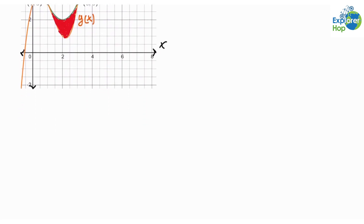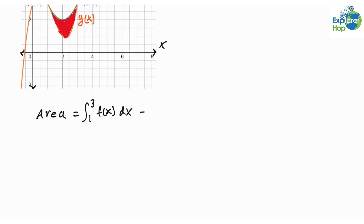So the area is equal to the area under f(x) over this interval, which is the definite integral from 1 to 3 of f(x) dx, minus the area under g(x) over this interval, which is the definite integral from 1 to 3 of g(x) dx.